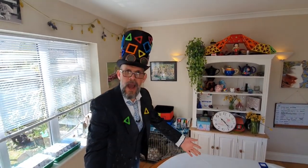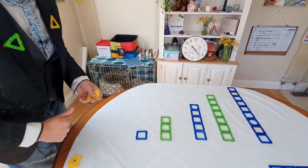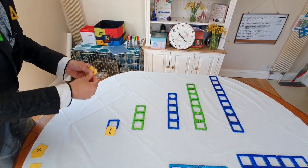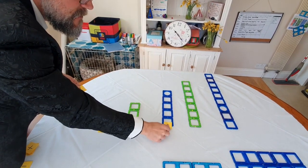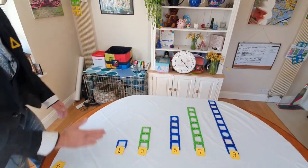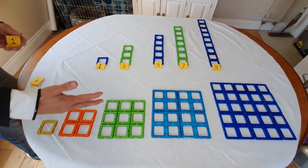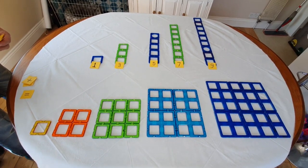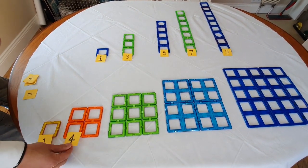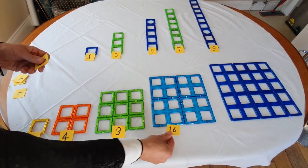What I have here on my beautiful table are some various different patterns. On the top I've got some odd numbers — we know what the odd numbers are, they're all the numbers that aren't in the two times table: one, three, five, seven, and nine. On the bottom I have what are known as square numbers, which actually look square. Square numbers are numbers times by themselves: one times one is one, two times two is four, three times three is nine, four times four is sixteen.